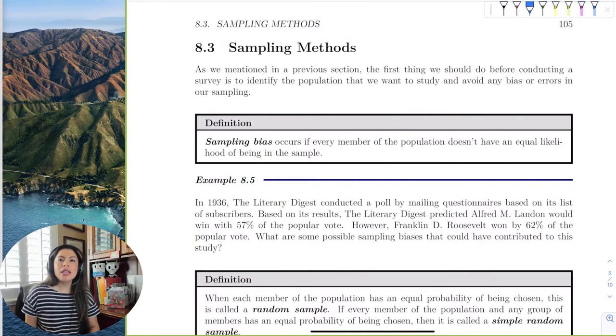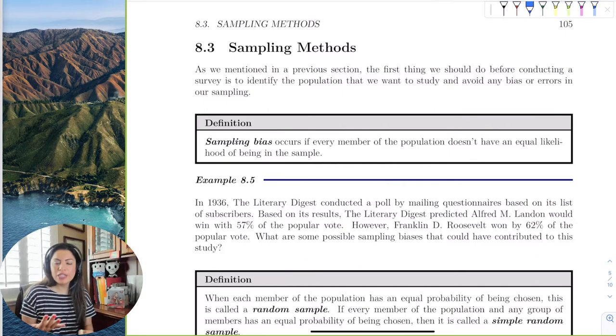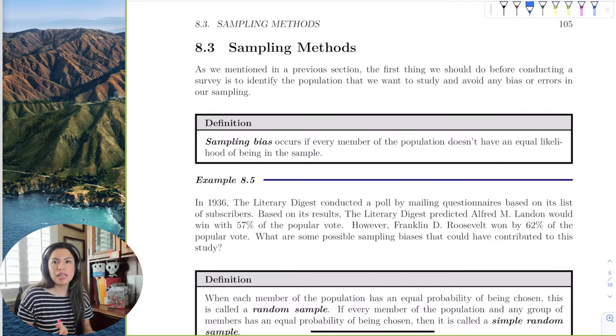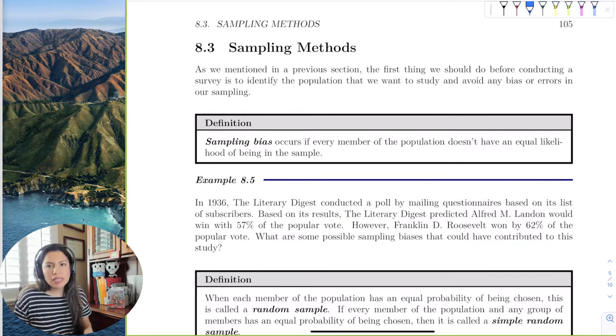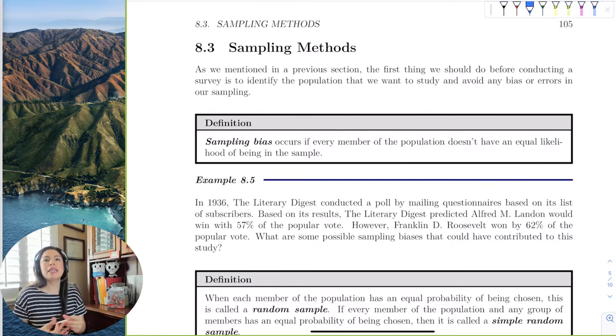All right, so I know that I have population, parameter, sample, statistic, and with the parameter and statistics are the types of data which is categorical or quantitative, right? So then how do I get the sample? You keep telling me it's unlikely we're going to get population, so now I have to select a sample, right? So how do I get that?